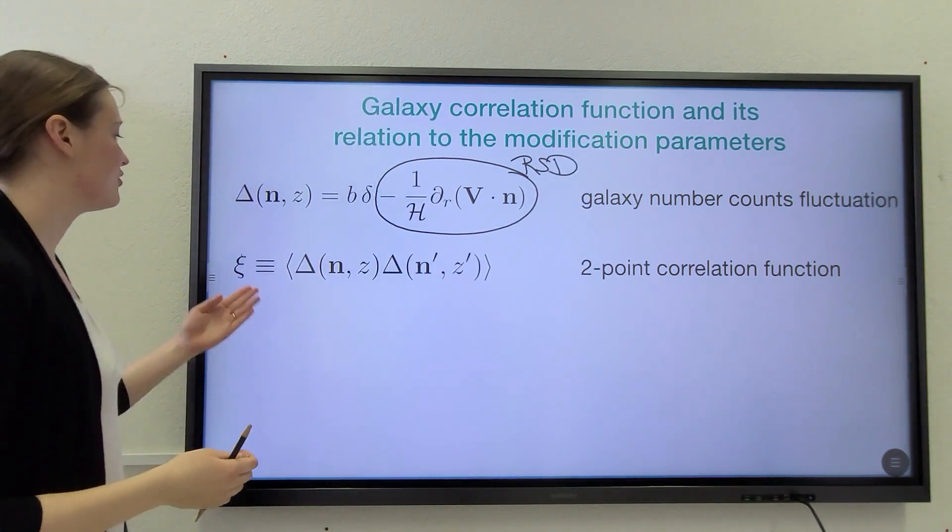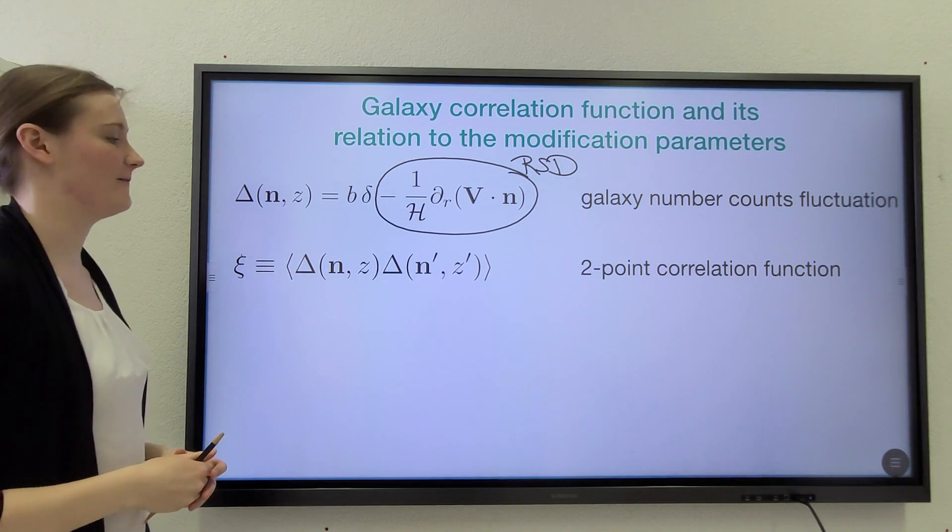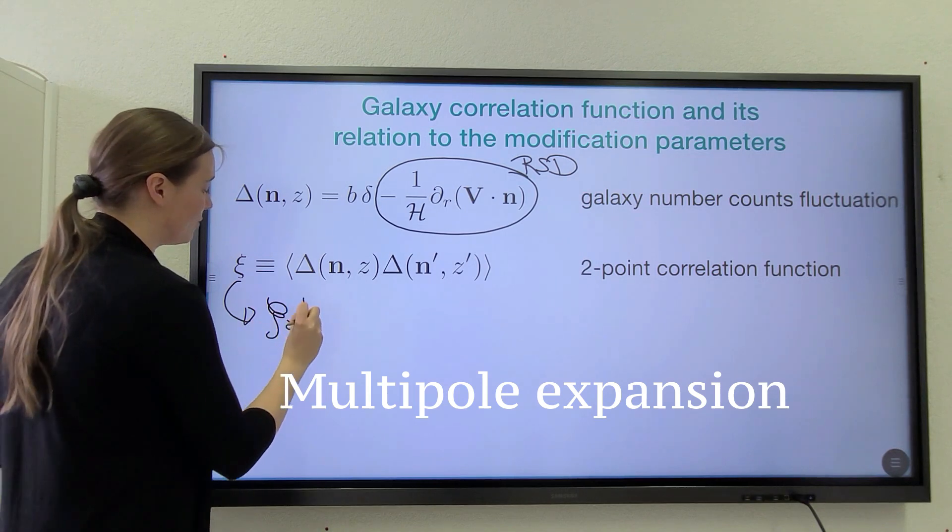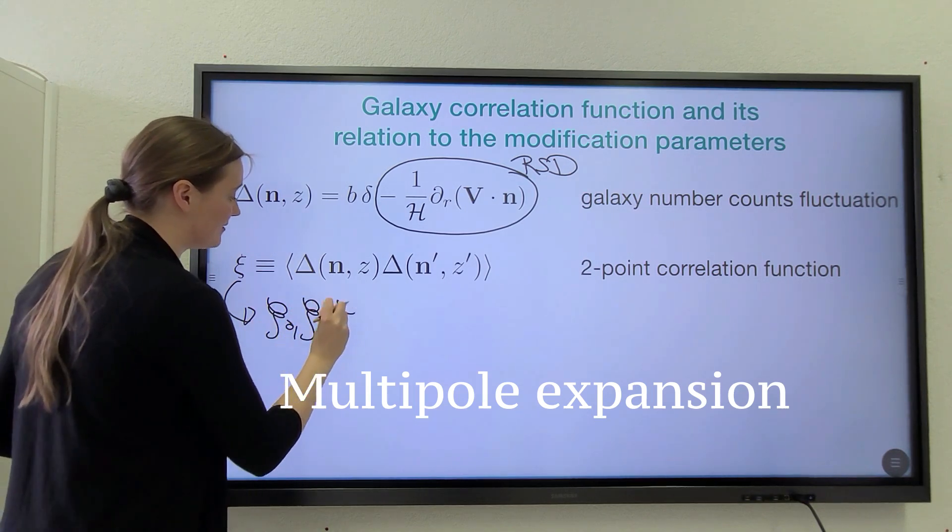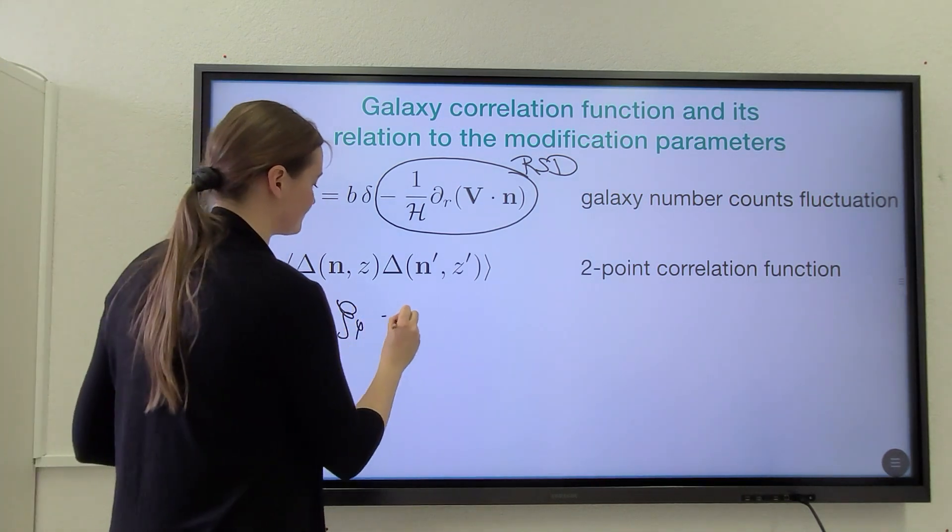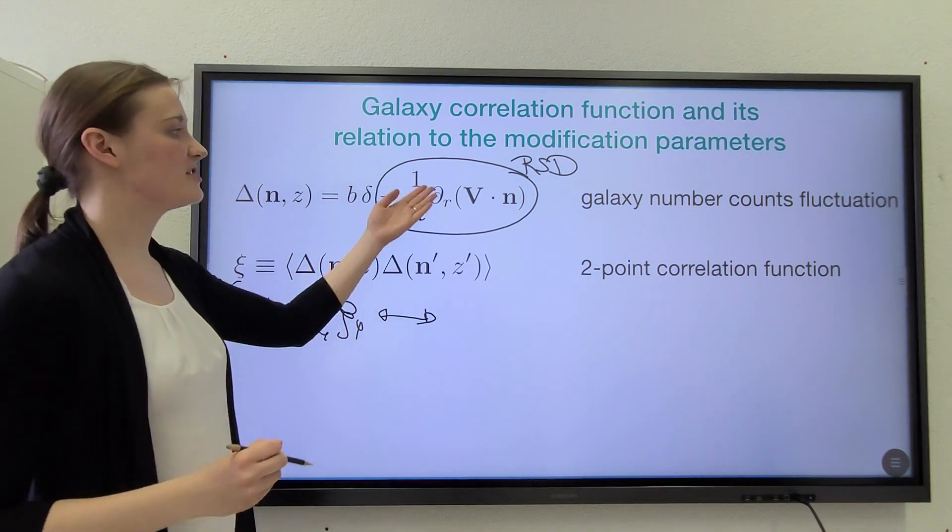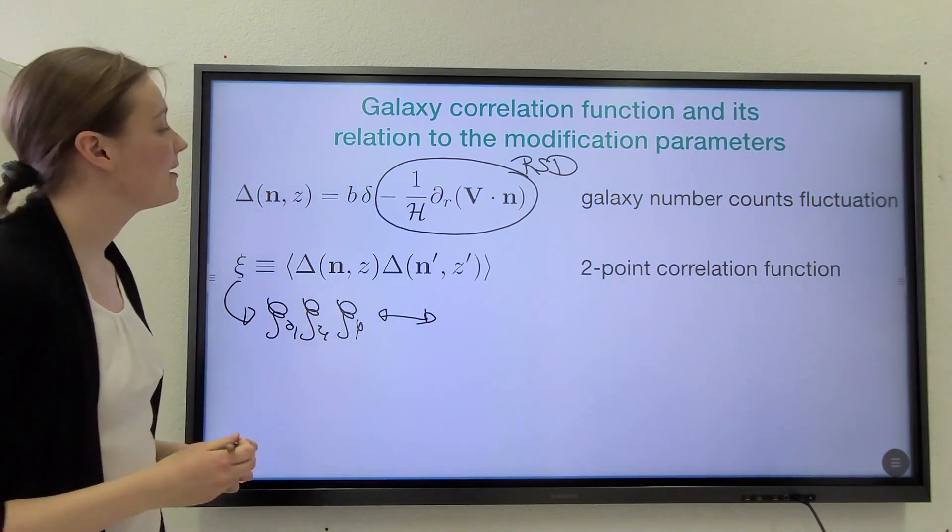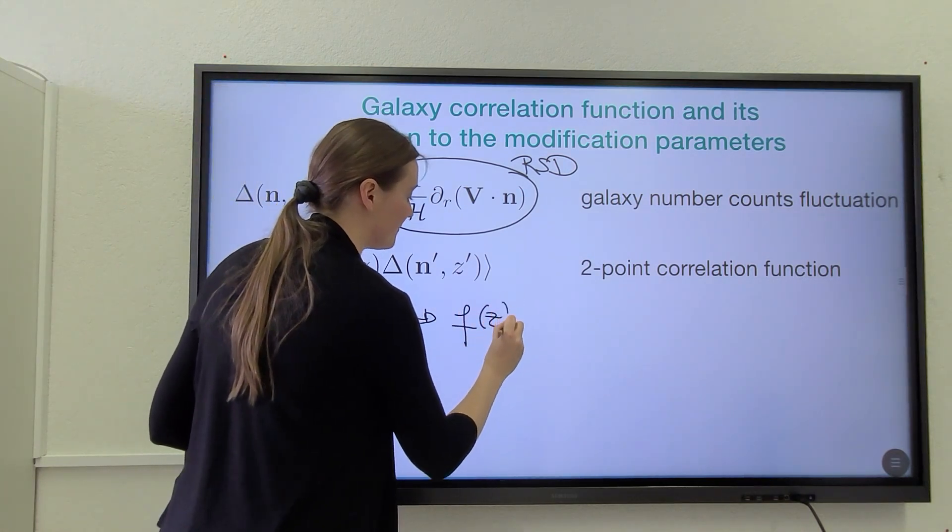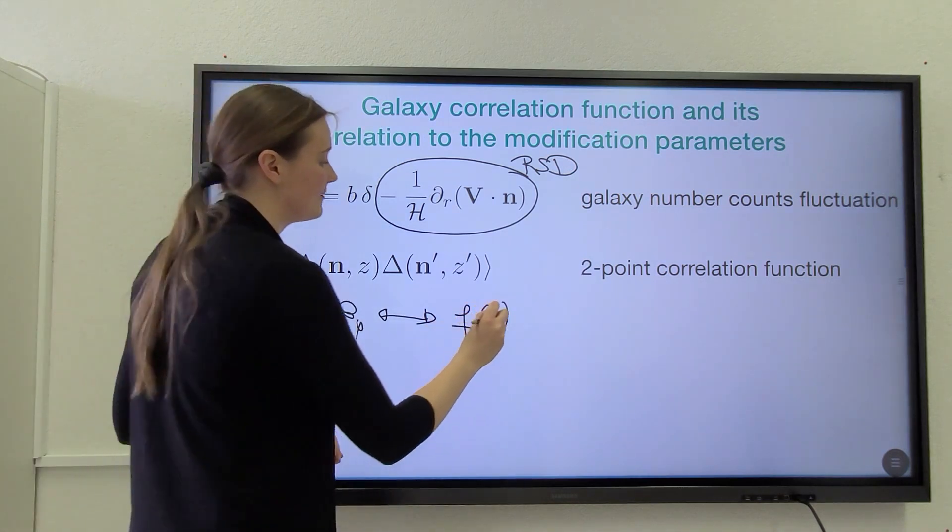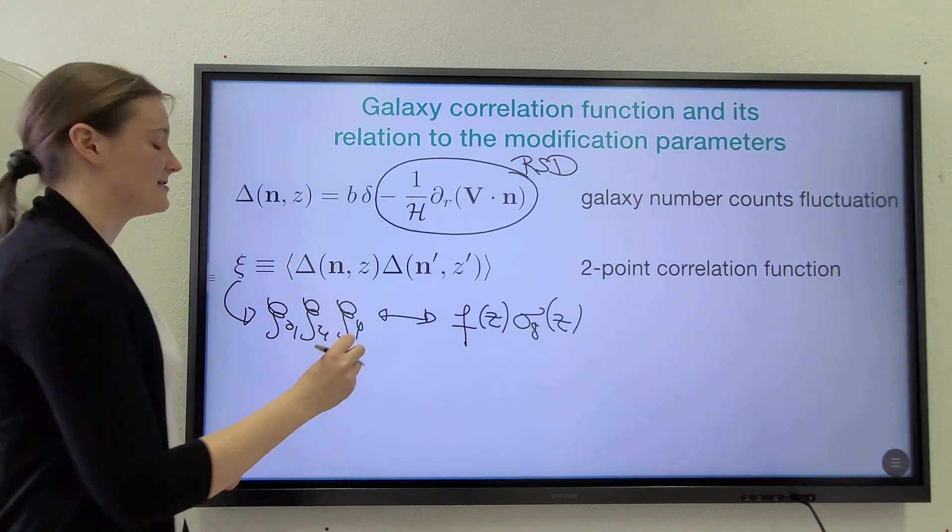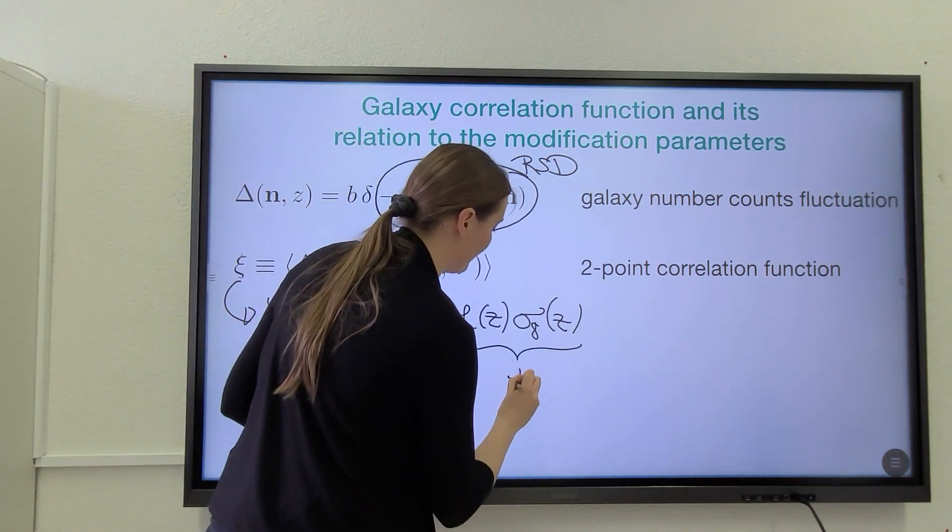In practice, we measure the two-point correlation function of galaxies. It can be expanded into a monopole, a quadrupole and a hexadecapole. So what do these multipoles depend on? For us, the redshift space distortion term is relevant. And from that, we find that there is a dependence on the growth rate f in combination with the matter fluctuation amplitude. So RSD surveys can measure this parameter combination, which we call tilde f.